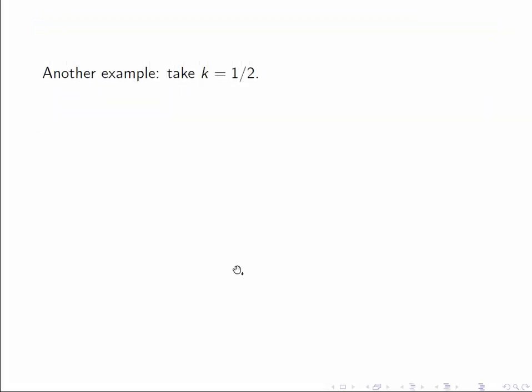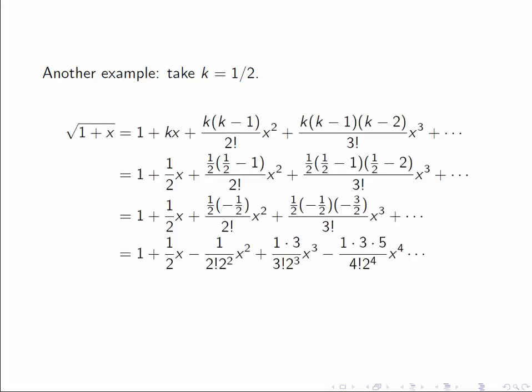So let's move on and finish with one more example of how to use this formula. Let's take the case k equals a half. This gives us the Maclaurin series for the square root of (1+x). So remember the general formula was this involving k's. We just go ahead and insert everywhere there's a k. We replace it by a half. So we get this formula.